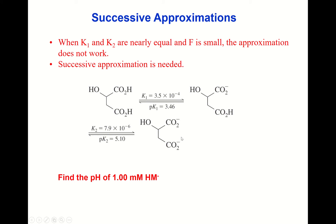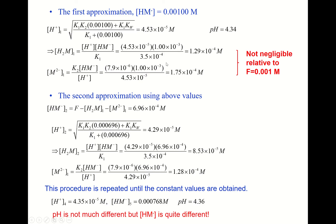The question is: find the pH of 1 millimolar HM⁻. The formal concentration F is small. Let's start from this intermediate form. Our first approximation is to set the equilibrium concentration equal to the formal concentration.